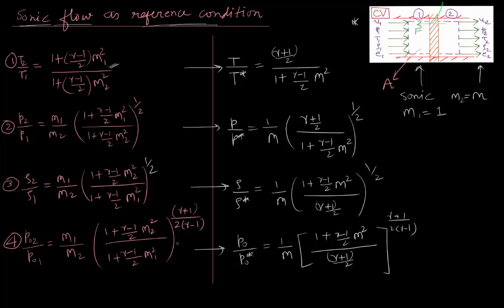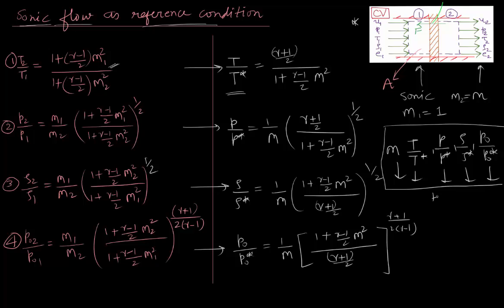So, we have taken sonic flow as the reference condition and denoted it with a superscript star, and we have done this to simplify our calculation. What we do is tabulate the ratios P by P star, rho by rho star, and P0 by P0 star for different Mach numbers M. This table is known as Fanno tables.